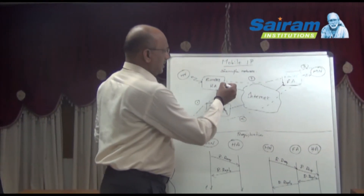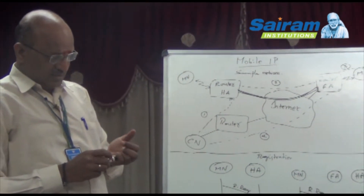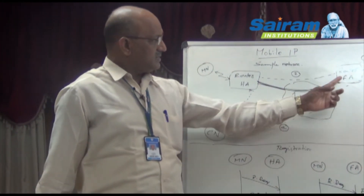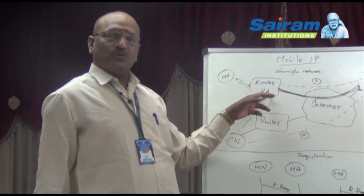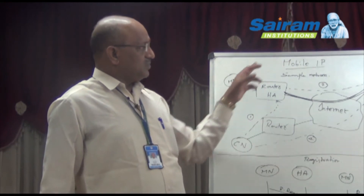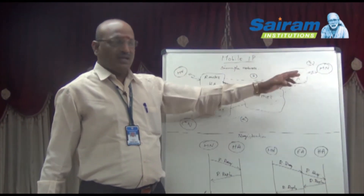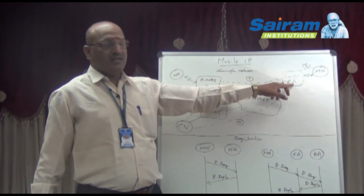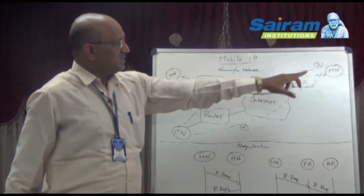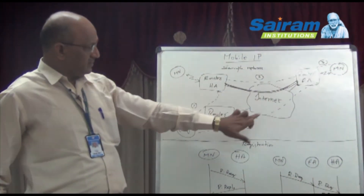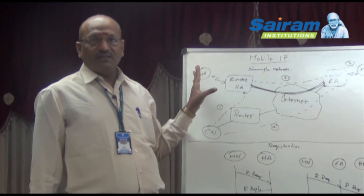Whenever a CN transmits packets, they go to the router, into the internet, and come to the home agent. Once the mobile node has moved to the foreign agent, the packets are tunneled, encapsulated, and flow through that router — which becomes the foreign agent or foreign network. The foreign agent decapsulates the packets and transmits the data to the mobile node. Once the mobile node gets the packet, it transmits back through the acknowledgement. This is the fourth step, forming the basic steps of Mobile IP.